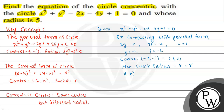The central form is (x - h)² + (y - k)² = r². Substituting h = 1, k = 2, and r = 5, we get: (x - 1)² + (y - 2)² = 5².